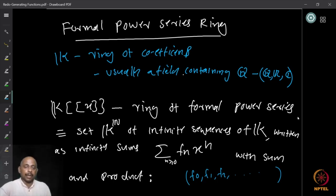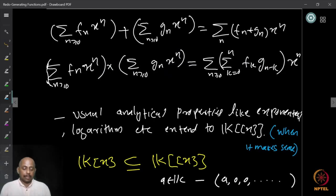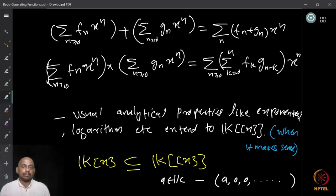The sum and product of infinite sequences — the ring elements — are as before: summation f_n·x^n plus summation g_n·x^n equals summation (f_n + g_n)·x^n; and the product is summation over all n, summation k = 0 to n, f_k·g_{n−k}·x^n. One thing to note is that the usual analytical properties — like exponentiation, logarithm — can also be extended to the formal power series ring whenever it makes sense.